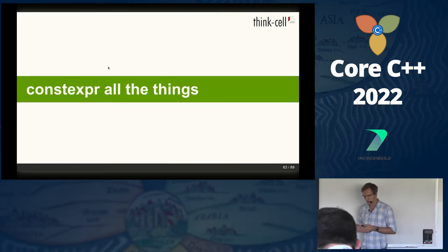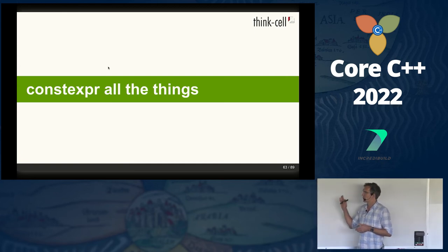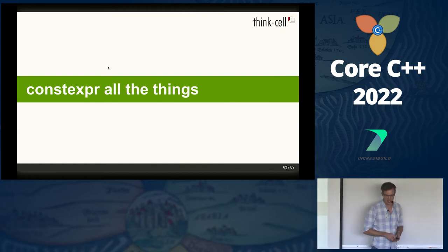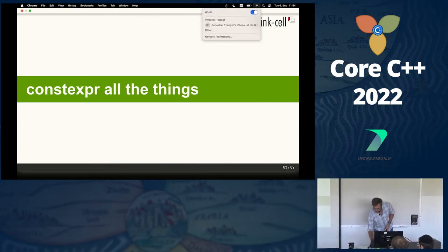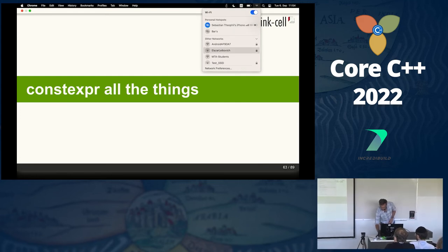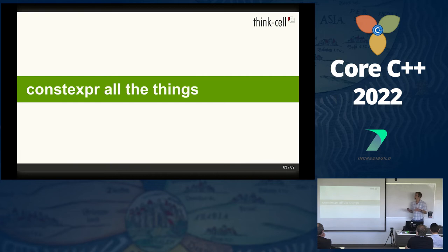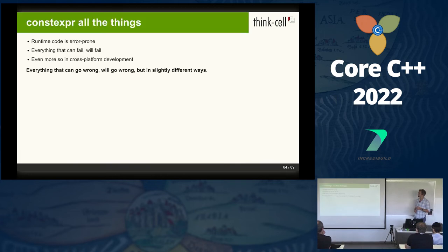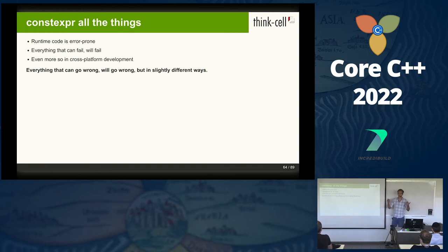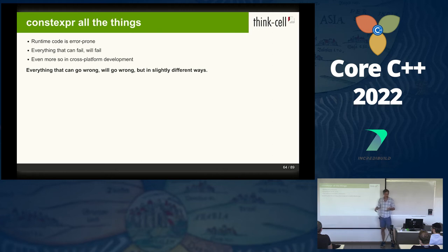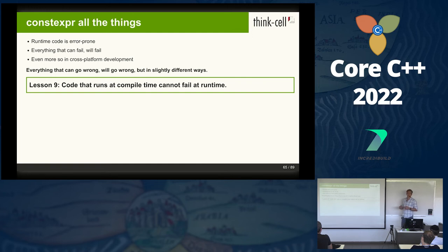Now to something more strictly C++-oriented. Compile-time programming is also something super useful in a cross-platform application context. Because of course we make errors as programmers, and sometimes interacting with operating systems will just fail — they return an error, and everything you write can fail in some way. In a cross-platform application, that means everything that can go wrong will go wrong, but in slightly different ways, which is very difficult to deal with. That goes away when you do stuff at compile time — it cannot fail at runtime anymore.